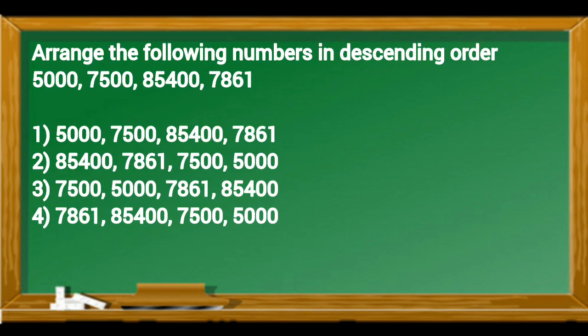Arrange the following numbers in descending order. In this sum given numbers are 5,000, 7,500, 85,400, 7,861. To arrange these numbers into descending order, arrange them greatest to smallest.